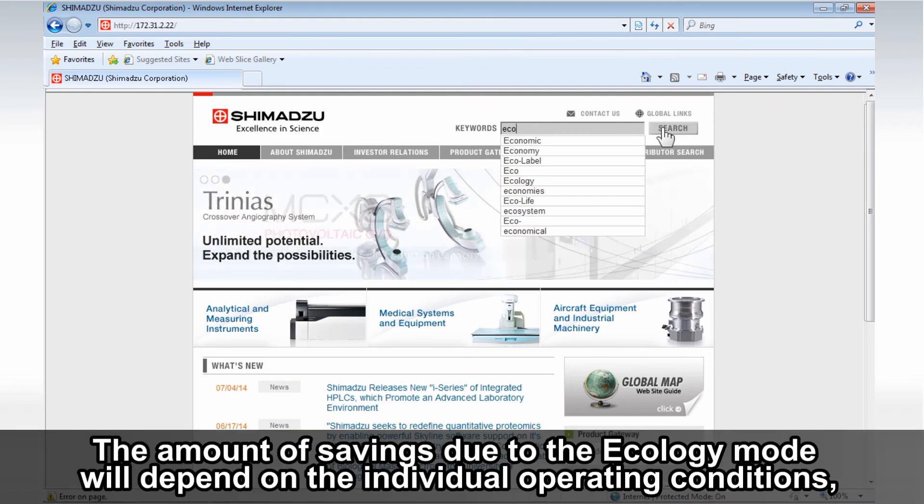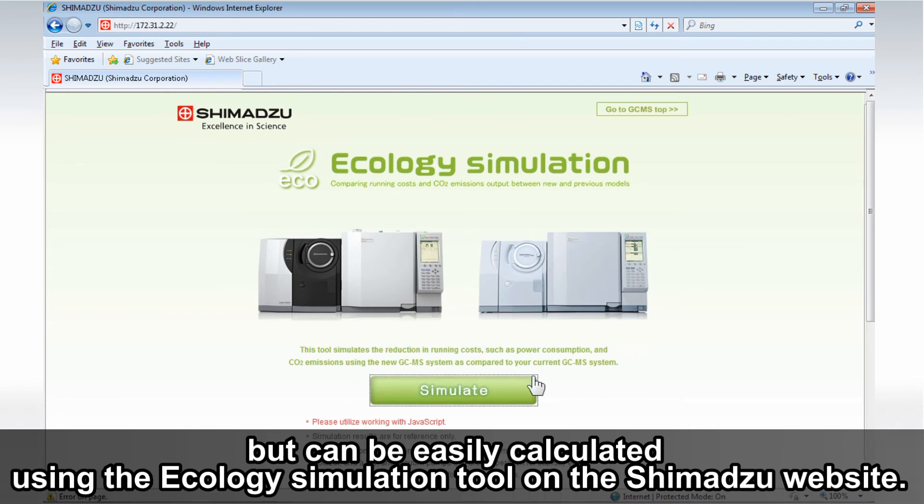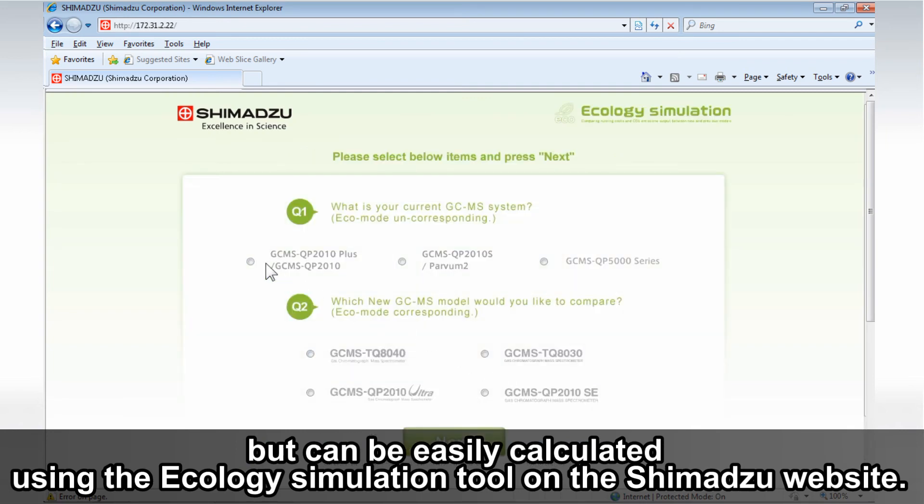The amount of savings due to the Ecology Mode will depend on the individual operating conditions, but can be easily calculated using the Ecology Simulation Tool on the Shimadzu website.